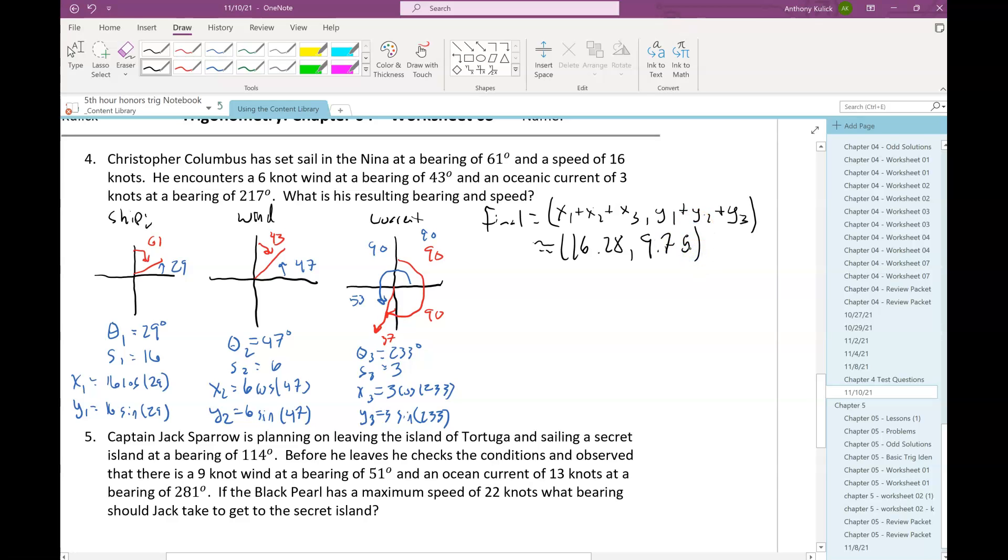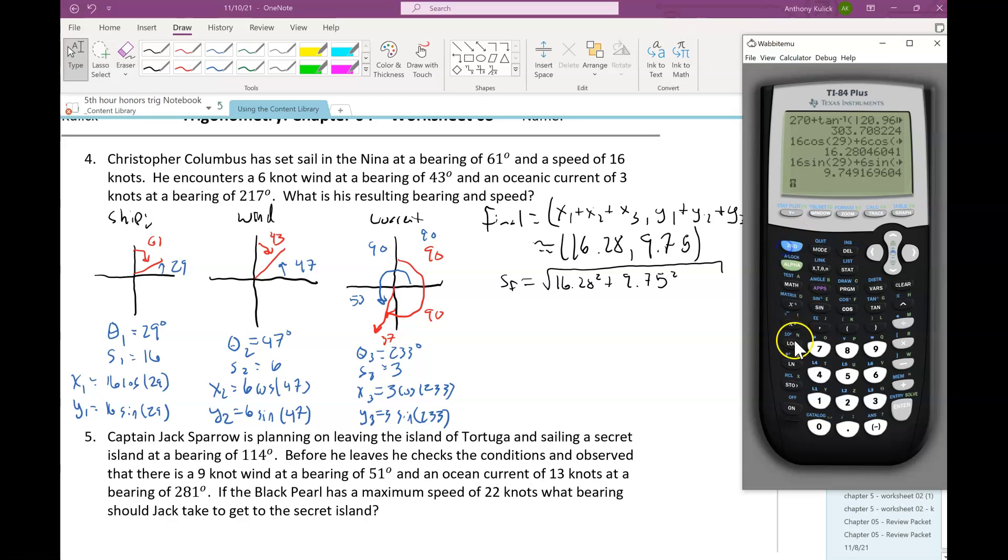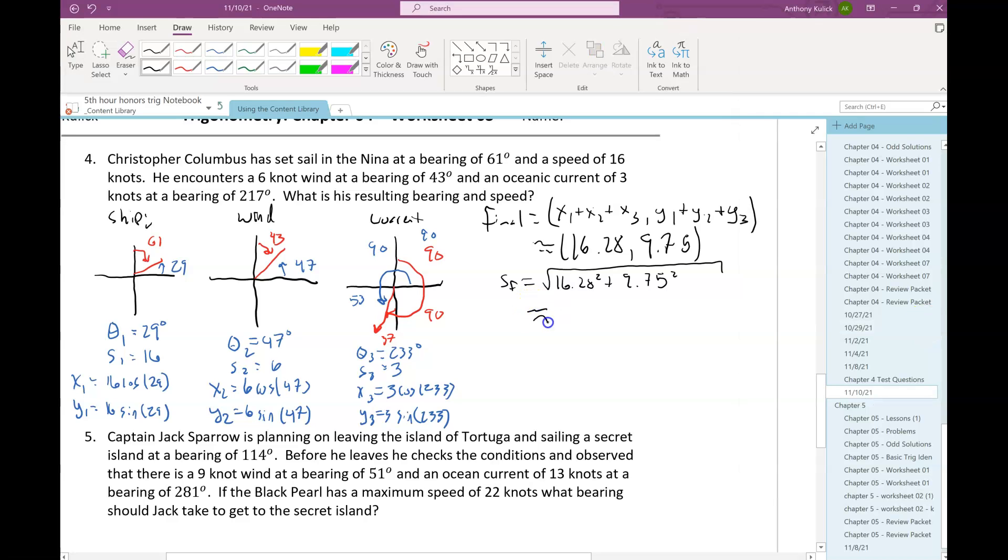So there I have 9.75. Okay, with that, Ava? Yes. Okay, from this now, I can calculate my final speed just using the Pythagorean theorem or the distance formula. Same thing in this case. Okay, so that's about 18.97 knots. Okay there? Yes.